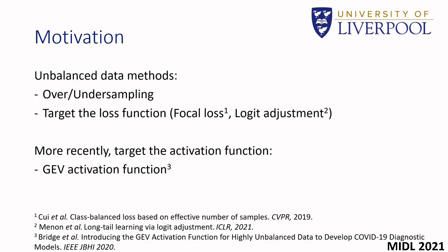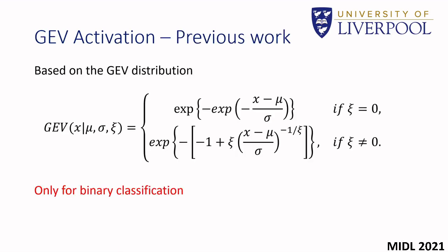Last year we proposed a method which targets the activation function. Rather than accounting for the long-tail distribution from the output using the loss function, we accounted for the distribution in the actual model by replacing the activation function with a more suitable distribution — the generalized extreme value (GEV) distribution. The GEV distribution is widely used in finance and meteorology to model extreme events such as market crashes and extreme weather. We proposed using the GEV as an activation function as a direct replacement for the sigmoid activation and showed much improved results. The previous work showed that when data is balanced there is no significant difference between sigmoid and GEV, but for unbalanced data the GEV gave much improved results.